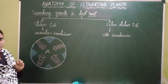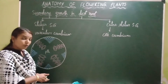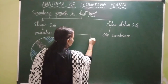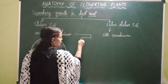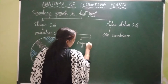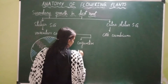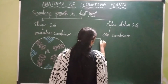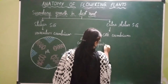In these radial vascular bundles, there is formation of vascular cambium. The vascular cambium formation occurs by the de-differentiation of conjunctive tissue and pericycle.